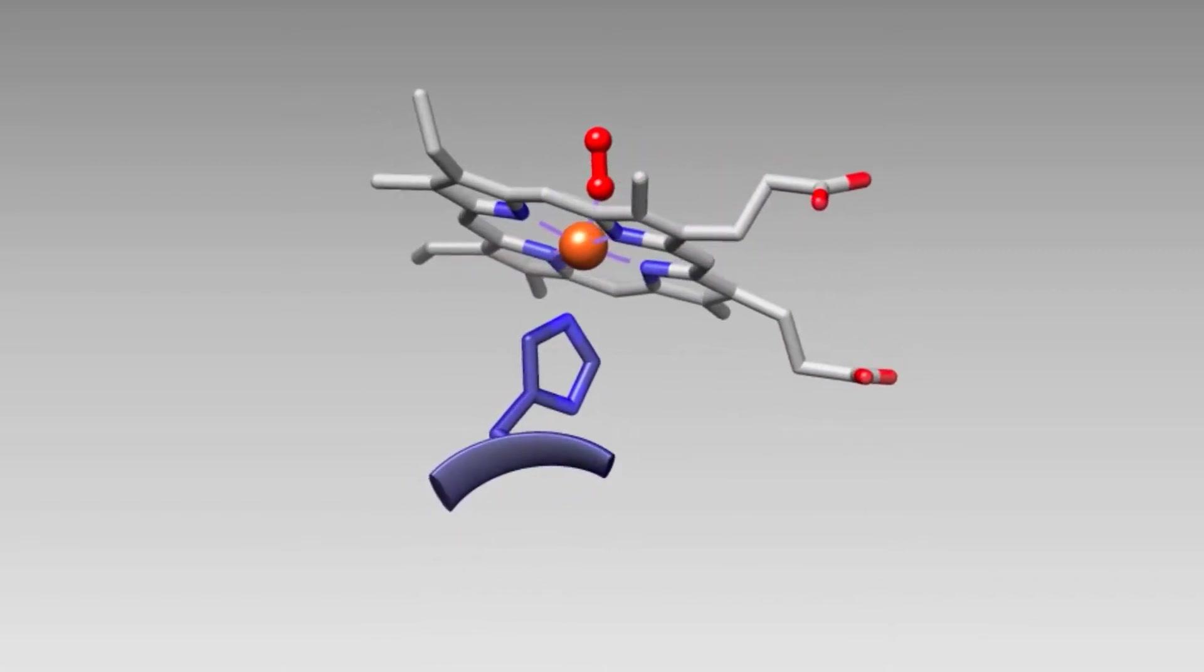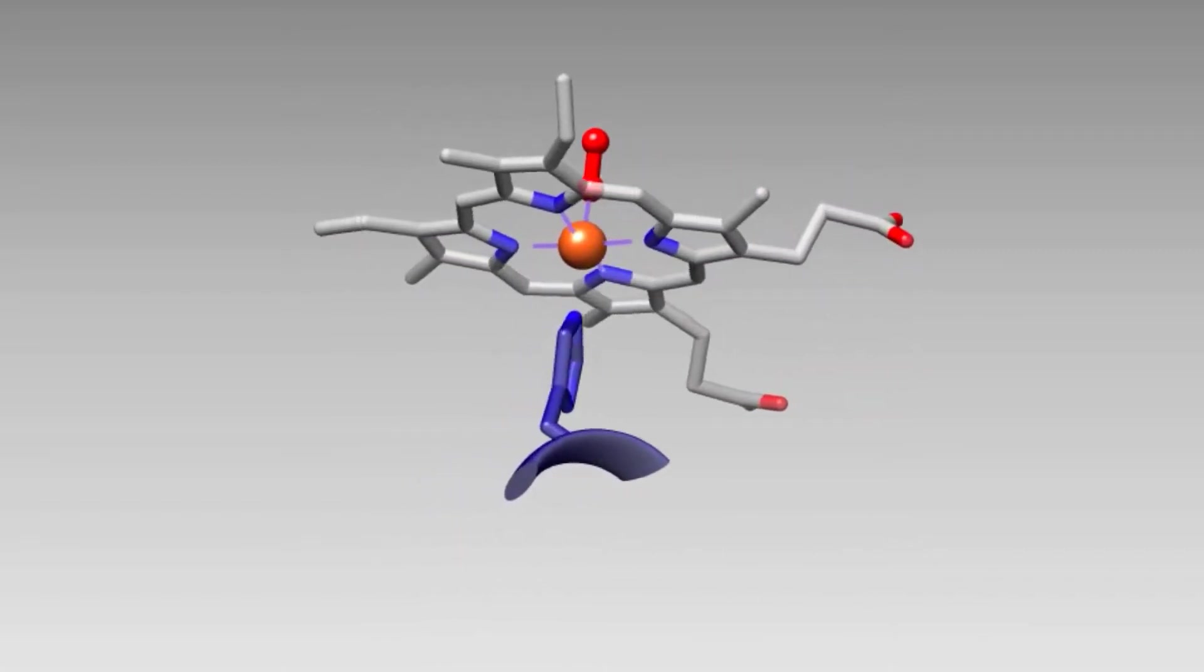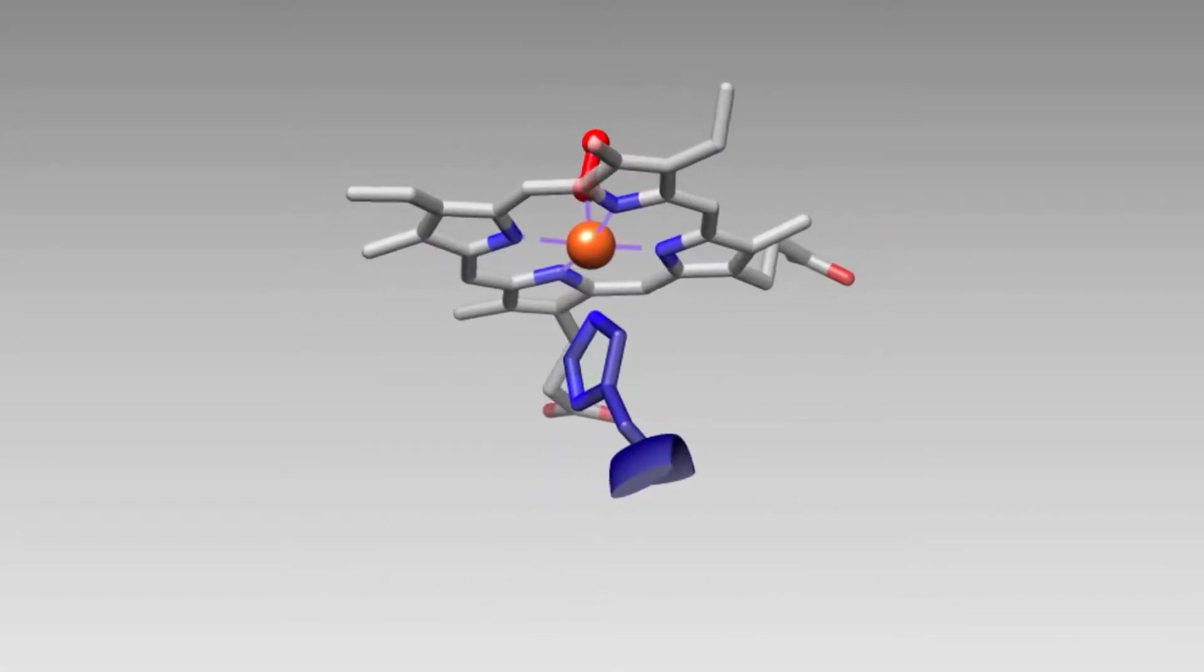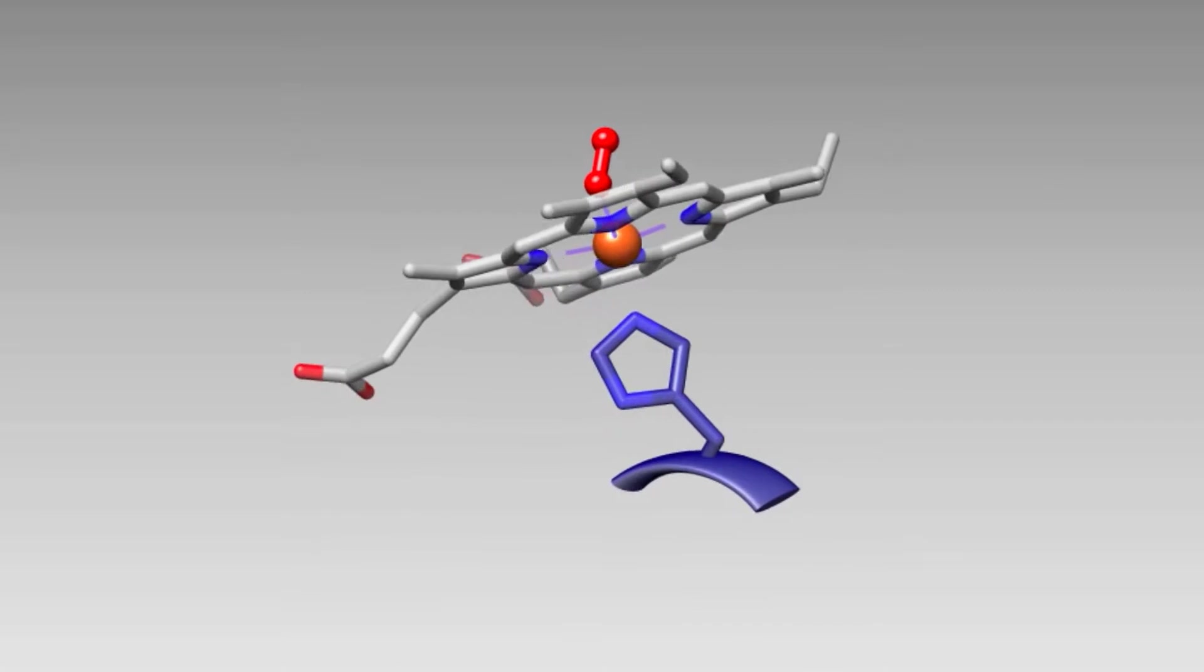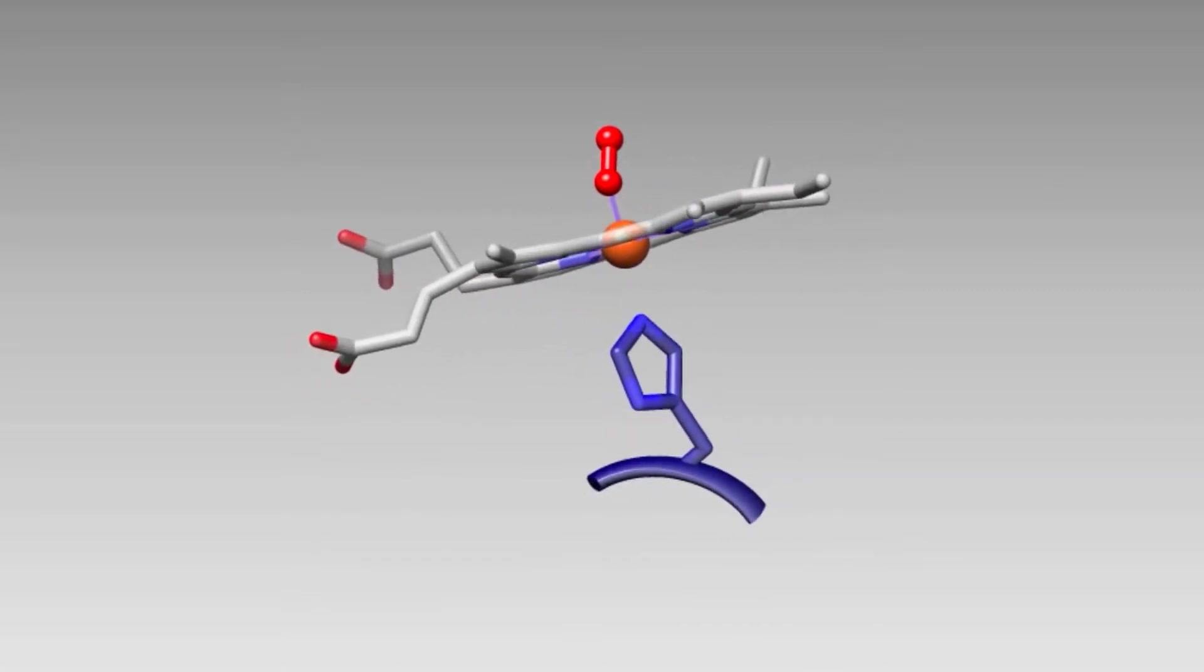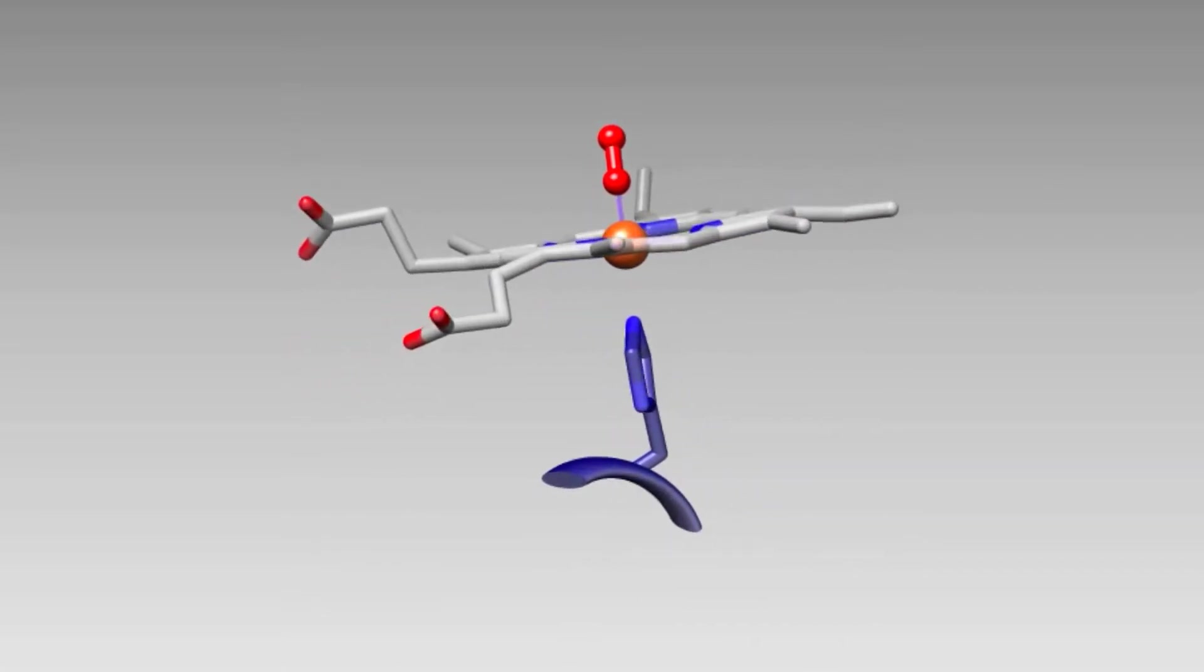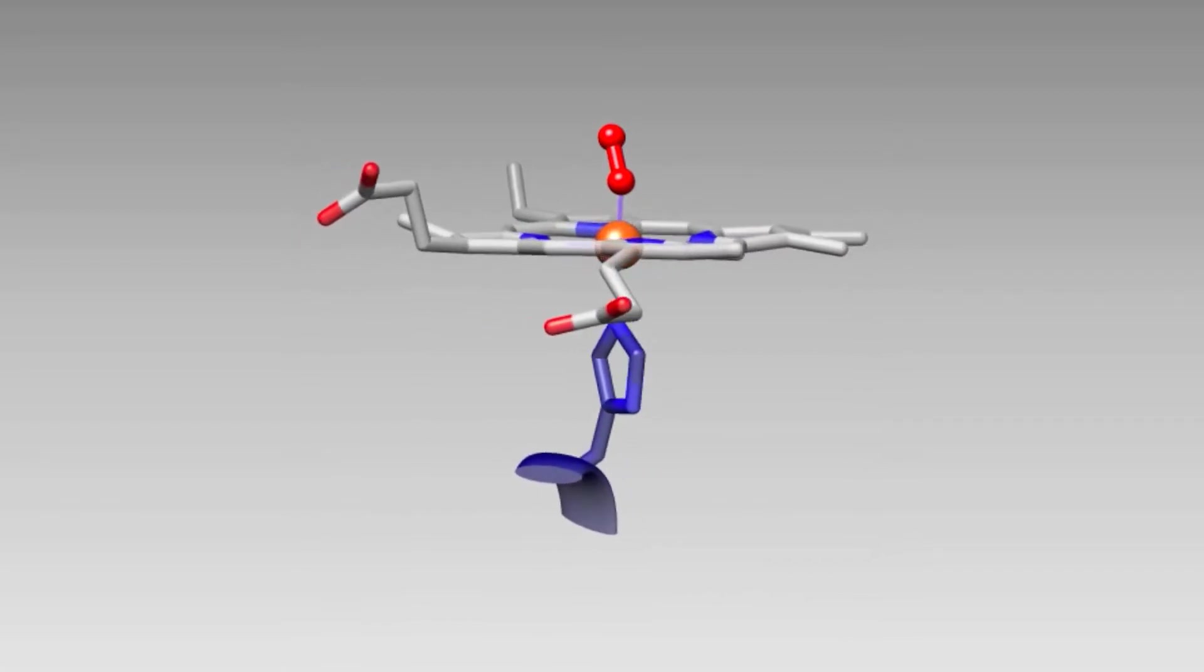When oxygen is bound to the iron 2 in the heme group, it is six coordinate low spin. The geometry of the system is octahedral, and the charge transfer electron transitions within the system are what is responsible for the red color of oxygenated blood.